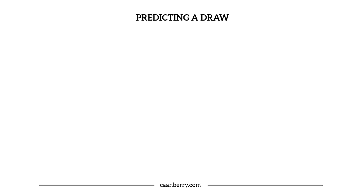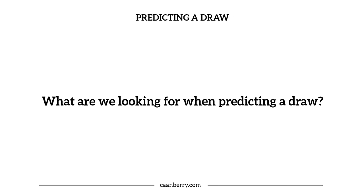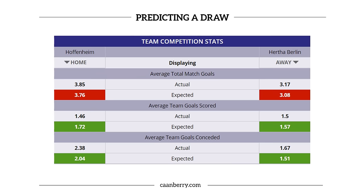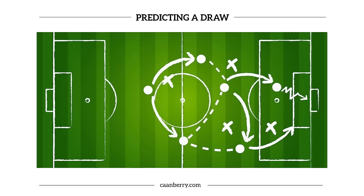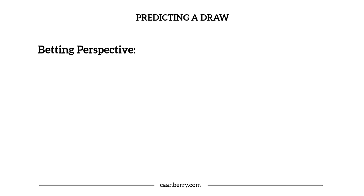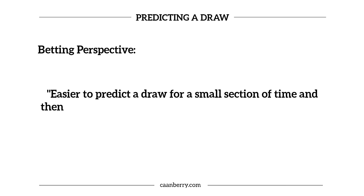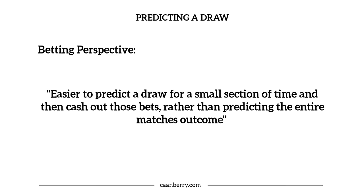So what are we looking for specifically in terms of predicting the draw? We're going to look for matches where there's less tension on the pitch — less attacking and more possession of the ball. You want to think about it strategically, as though you're a football manager: what the overall intent is and what you'd like the game's outcome to be. From a betting perspective it's slightly different, because it's easier to predict a draw for a small section of time and then cash out those bets, rather than predicting the entire match's outcome — although that can be possible too.